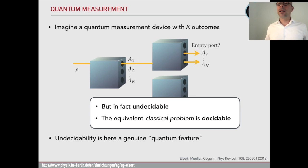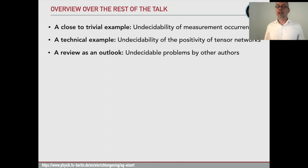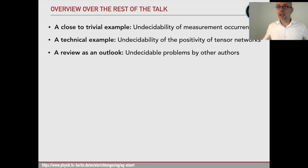Undecidability here is a genuine quantum feature in the sense that destructive or constructive interference seems to matter. The simple, close-to-trivial example we keep in mind for most of the talk is the undecidability of measurement occurrence. We then briefly look at the more practically important but more technical problem of the undecidability of the positivity of tensor networks. At the end of the talk we will review undecidable problems from other authors and survey what is out there in the literature.